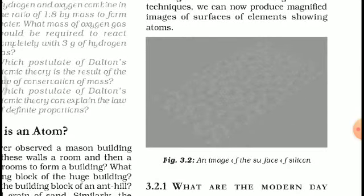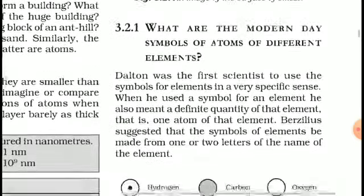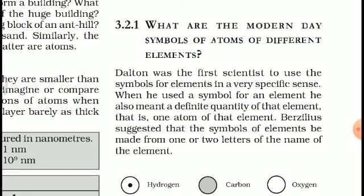In Figure 3.2, it is an image of the surface of silicon. Next, what are the modern-day symbols of atoms of different elements? Dalton was the first scientist to use symbols for elements. When he used a symbol for an element, he also meant a definite quantity of that element — that is, one atom of that element.